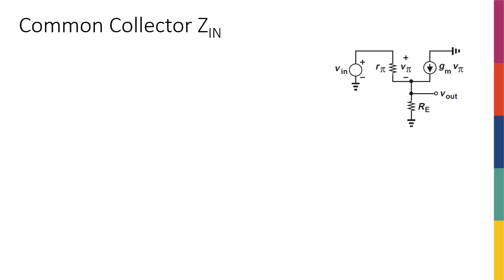A natural question to ask is what is the input impedance or input resistance — meaning basically what is the resistance seen from here, Z_in or R_in. There's nothing new here. Looking into the base, I'm going to see R_pi plus whatever resistance I have at the base — in this case none — plus whatever I have at the emitter times (beta + 1), so (beta + 1) times R_e. That's pretty much R_in.